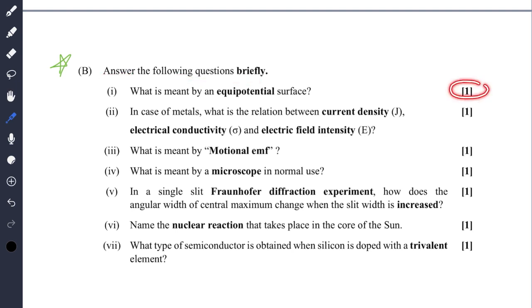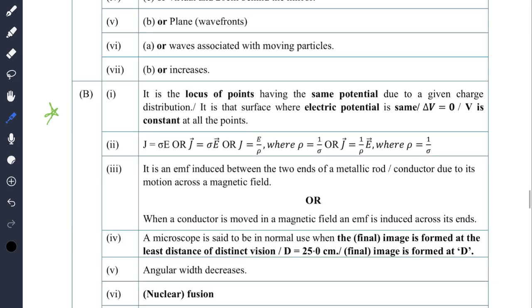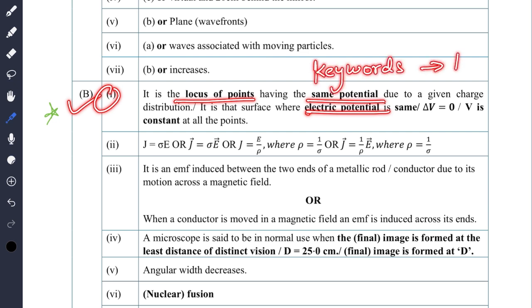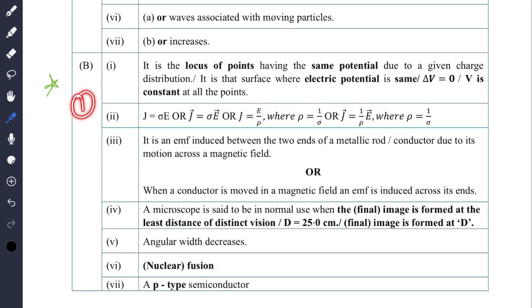This part is to answer the questions briefly. This is one marker - you do not need to expand the answers, just write the statement what is asked. What is meant by an equipotential surface? It is the locus of points having the same potential. You can see the keywords have been underlined or made bold. You can also underline your keywords. For one marker you do not have to exaggerate unnecessarily.